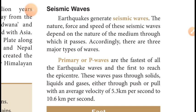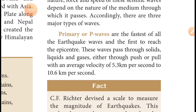So primary waves pass through all states of matter — solid, liquid, and gas. The average velocity of the primary wave is 5.3 kilometers per second to 10.6 kilometers per second.